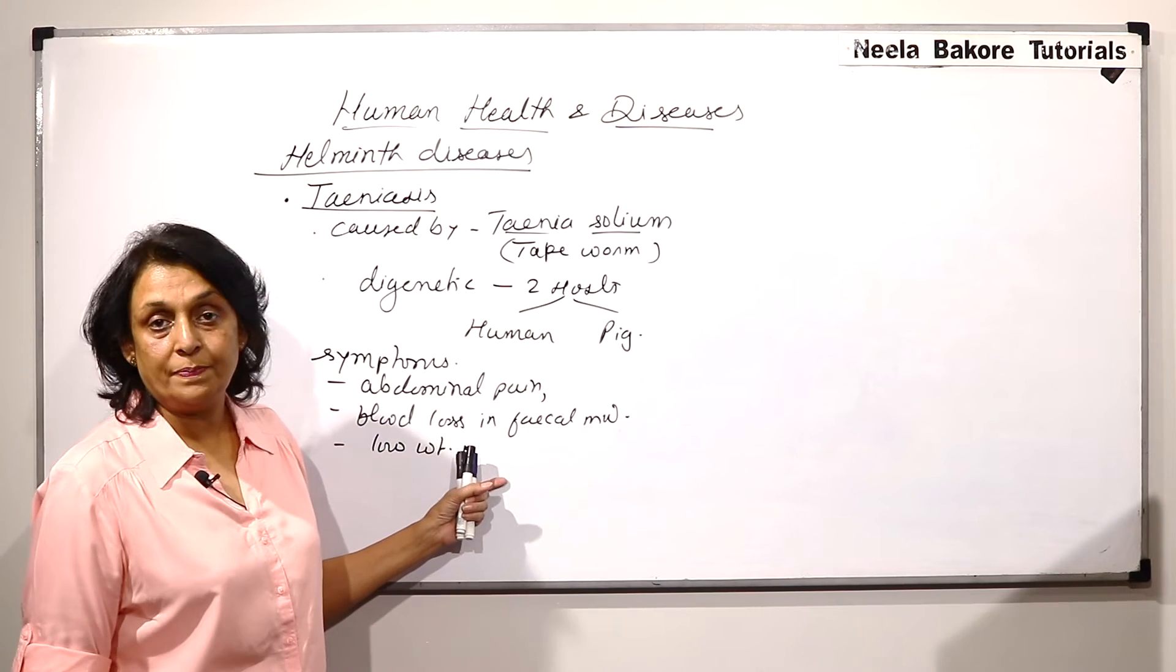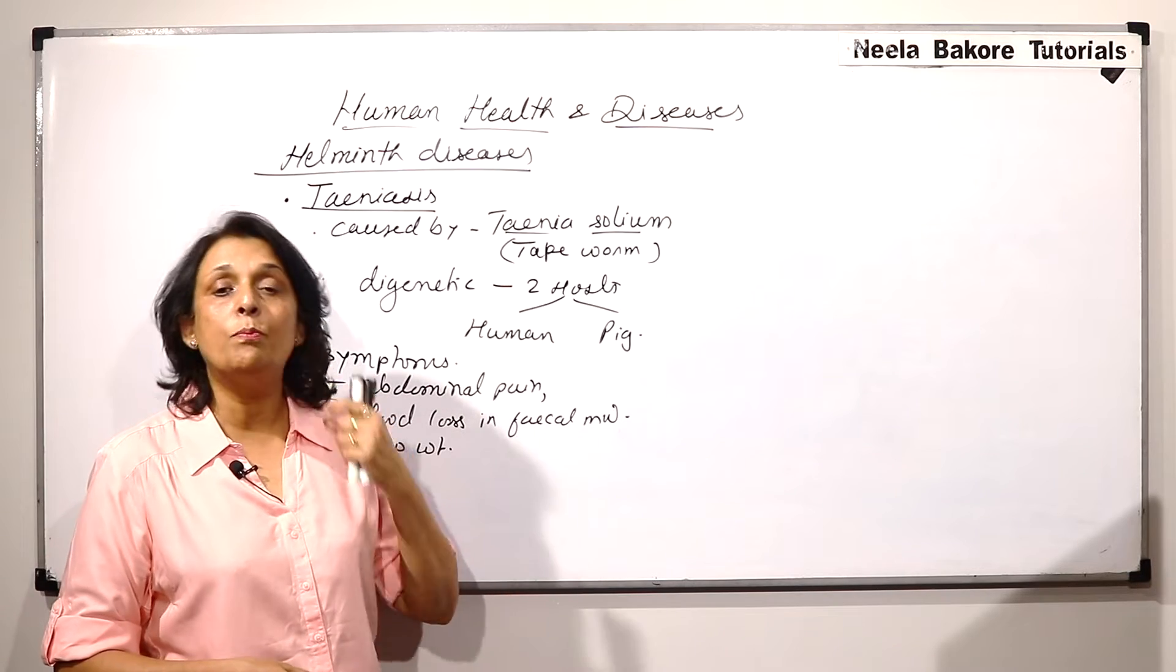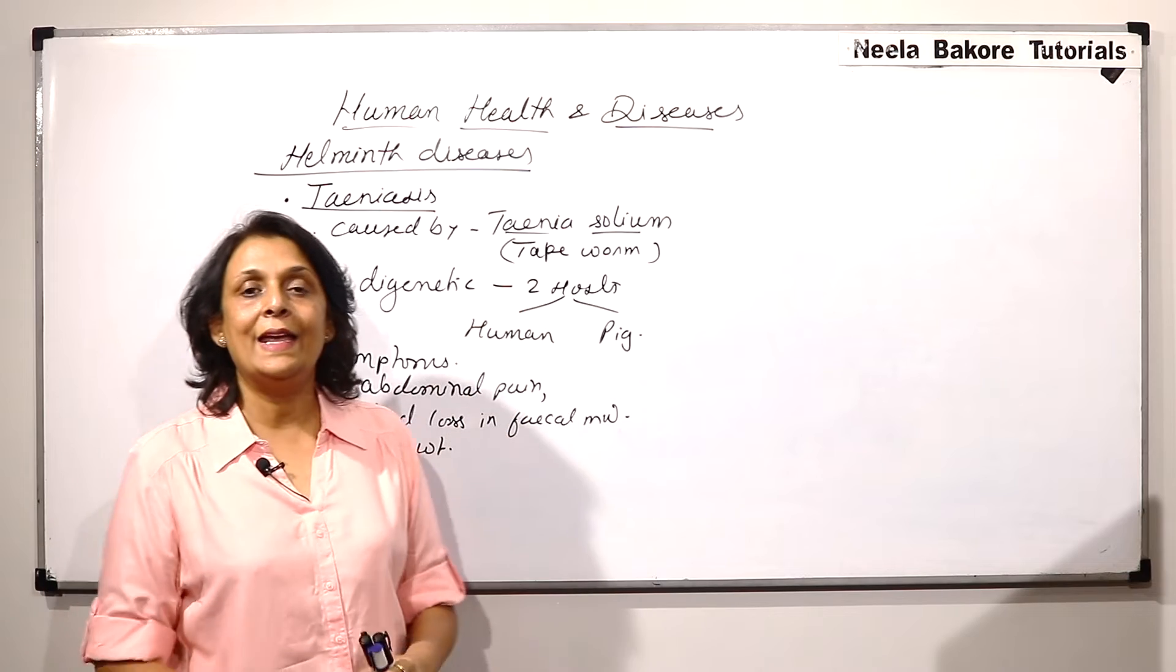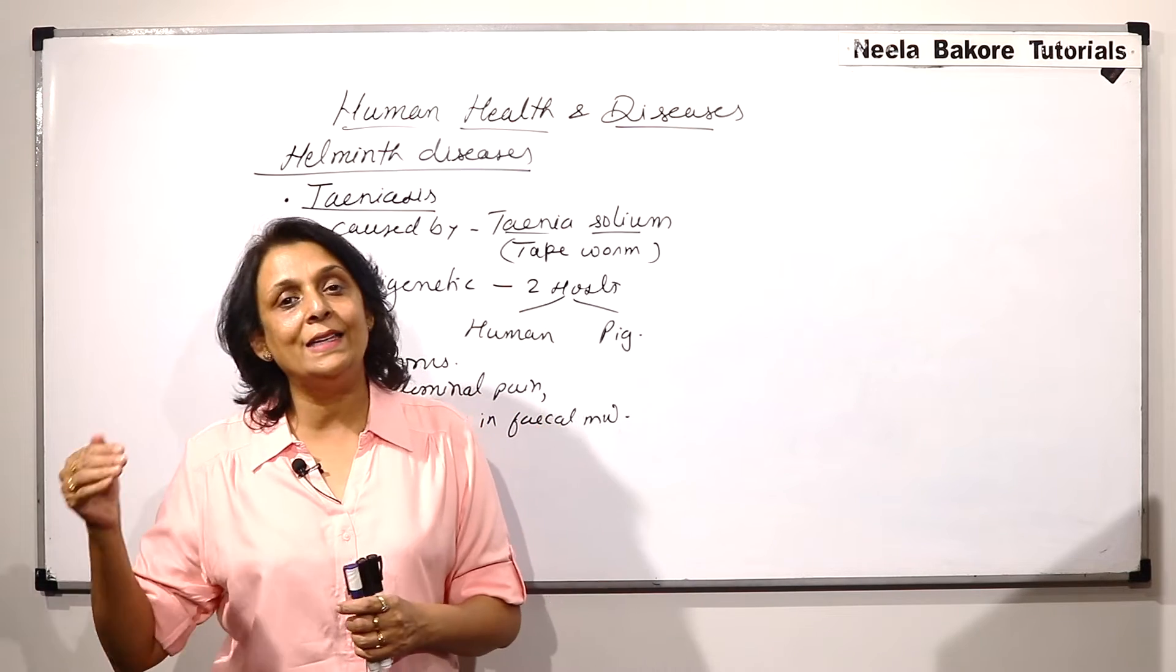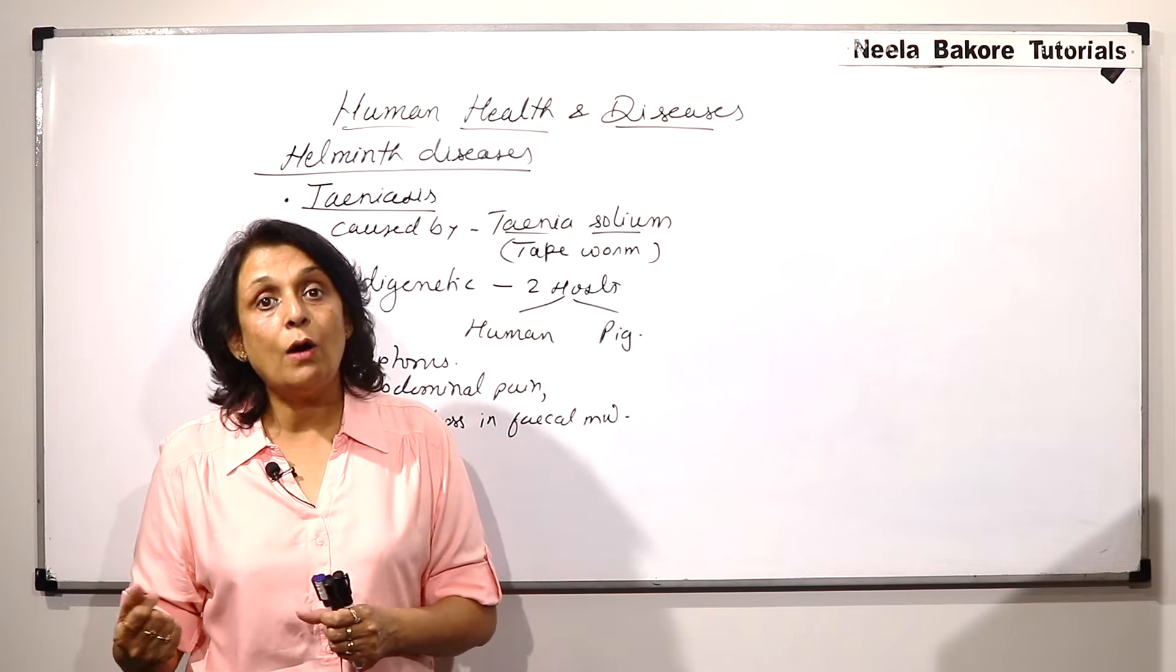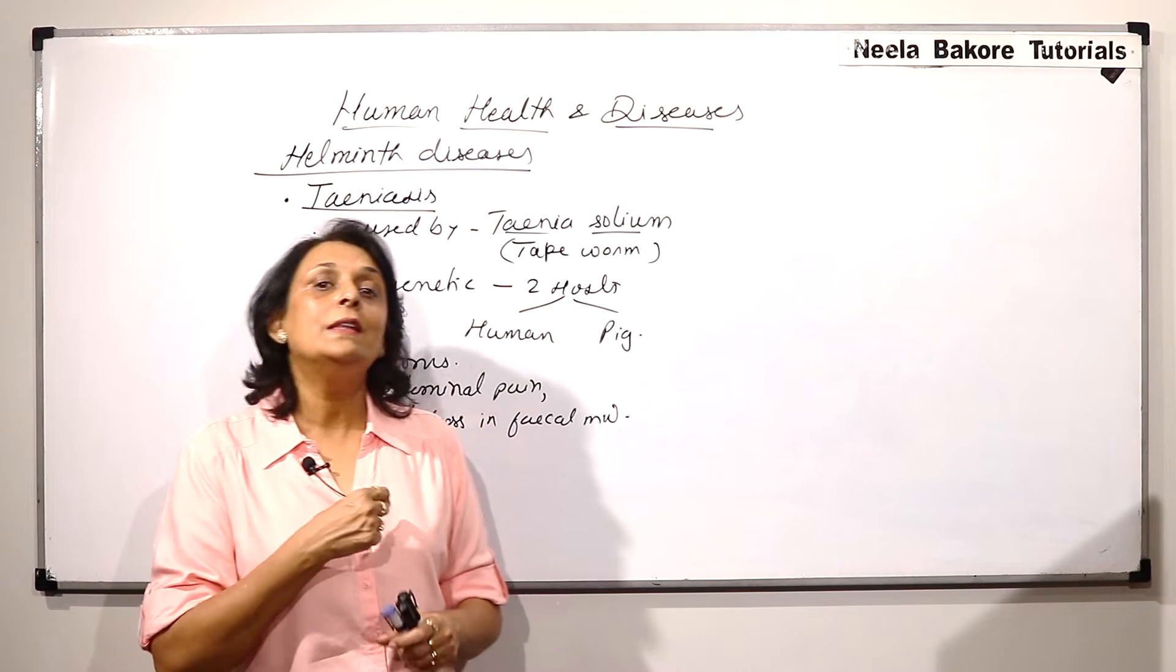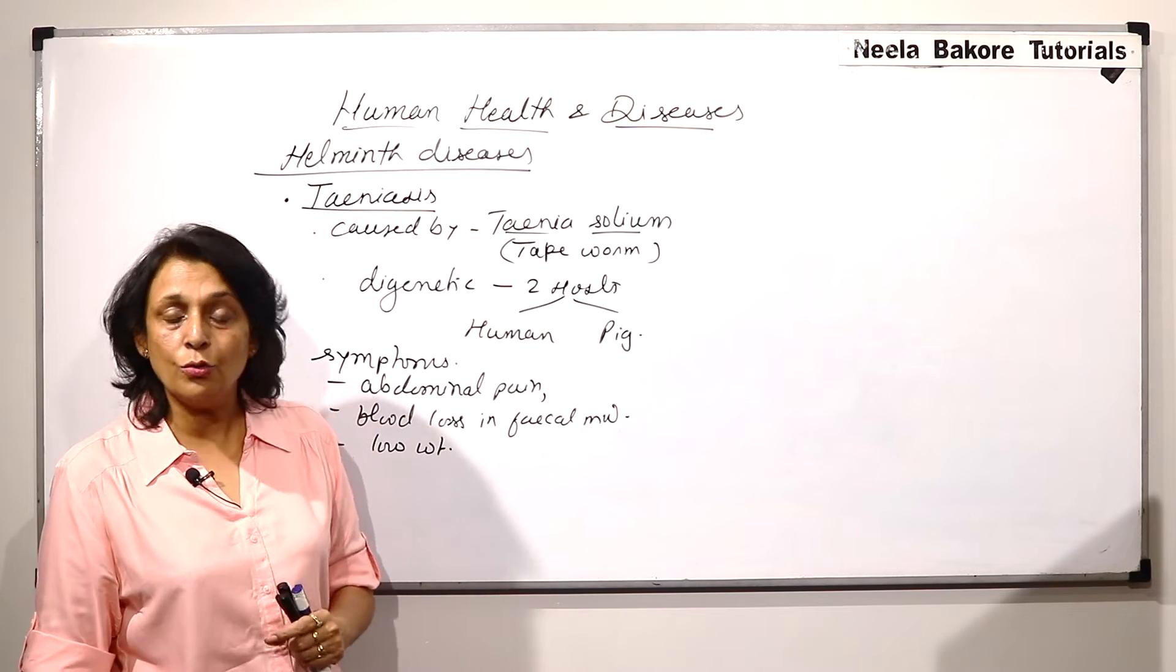Tapeworm Taenia solium and this will enter into our body only if we eat pork. There are various species of Taenia and they can be like completing the life cycle in human and buffalo or cow. So, then that is if people eat beef then only that type or that species of tapeworm would enter into the body.